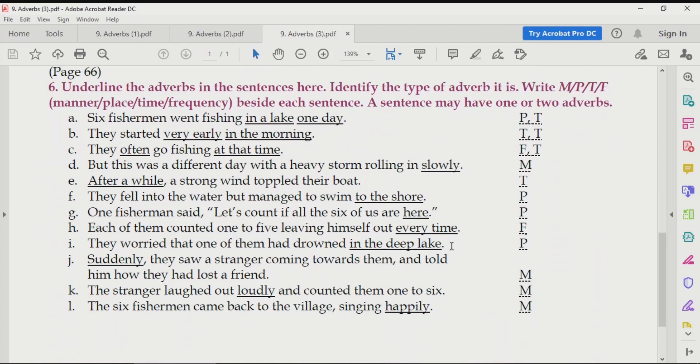We'll move on to question six. Now, over here, we have to underline the adverbs. Dear students, over here, you will get not one, not two, but you will get all the types of adverbs. You have to identify the type of adverb it is. First of all, find out the adverb, underline it, and then you have to say what type of adverb it is. And you can see over here, we have M, P, T, F. M means manner, P means place, T means time, and F means frequency.